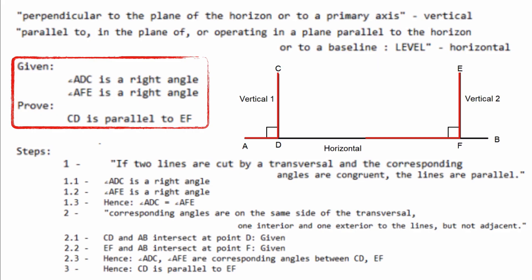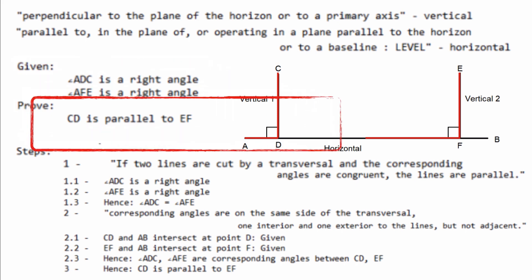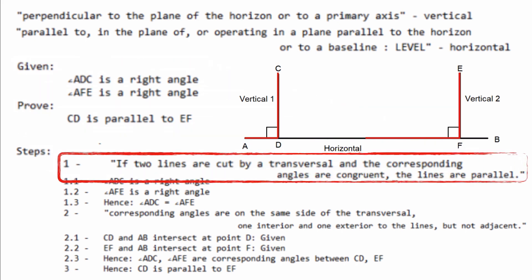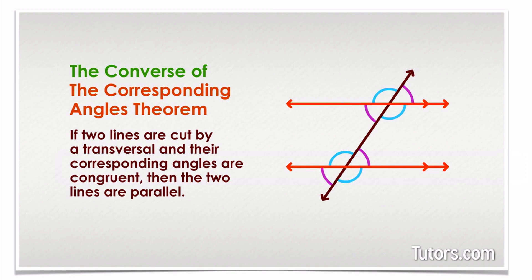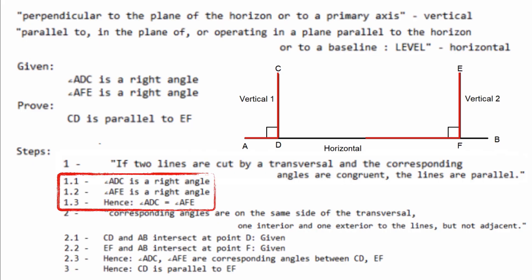The proof states that given two right angles prove the two upright lines are parallel to each other. If two lines are cut by a transversal, and the corresponding angles are congruent, the lines are parallel. This is a statement of the converse of the corresponding angles theorem. Next, he identifies the two right angles, and points out that, by definition, they are congruent to each other. He used an equal sign, but I'm not going to take off any points.